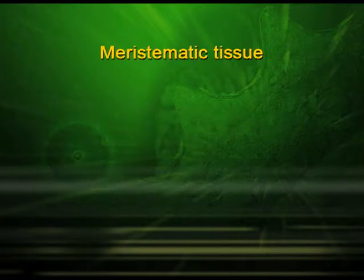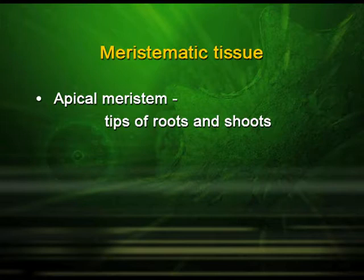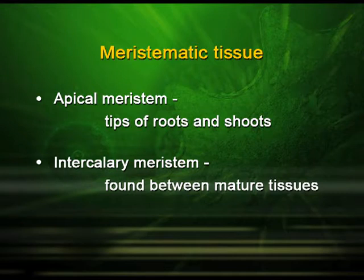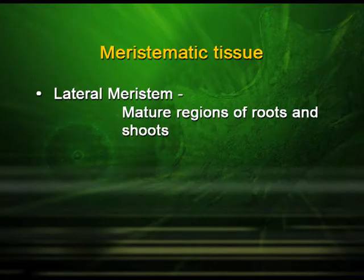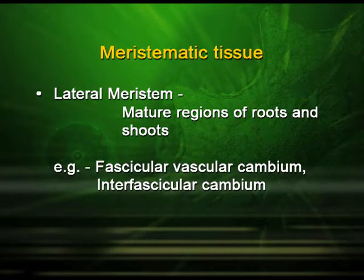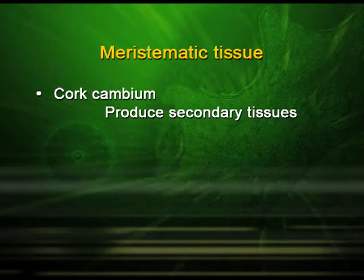The apical meristem is found in the tips of roots and shoots. The intercalary meristem is found between the mature tissues. The lateral meristem is found in the mature regions of shoot and root — for example, the fascicular cambium, the interfascicular cambium, and the cork cambium, which are responsible for secondary growth in plants.